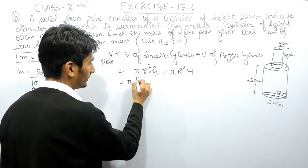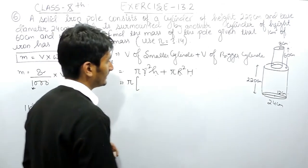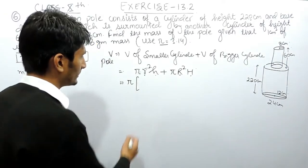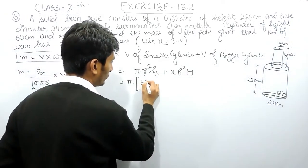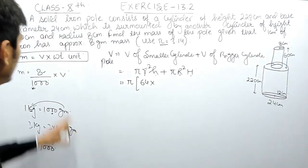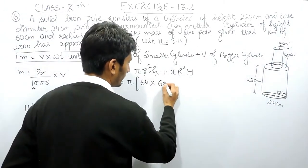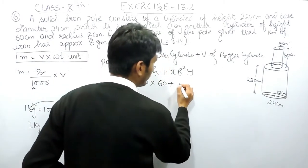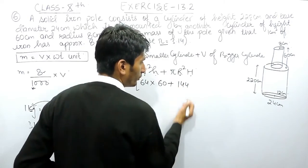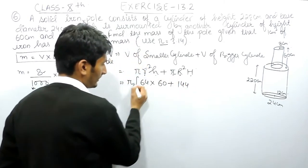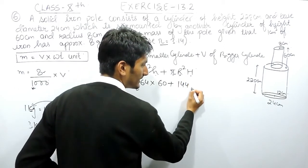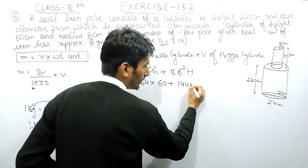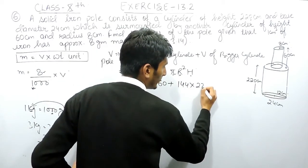Taking pi as common, for the smaller cylinder the radius is 8 cm, so r squared is 8 × 8 = 64, multiplied by height 60. For the bigger cylinder, radius is 12 cm, so R squared is 12 × 12 = 144, multiplied by H which is 220.